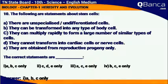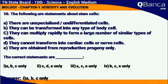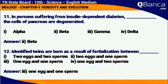The following are statements about stem cells: they are unspecialized and undifferentiated cells; they can be transformed into any type of body cells; they can multiply rapidly to form a large number of similar types of cells.